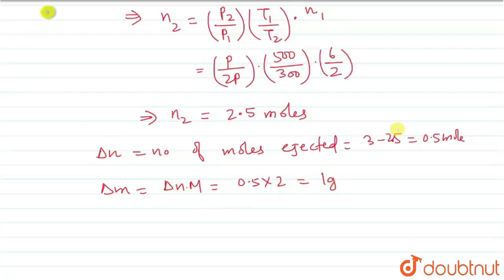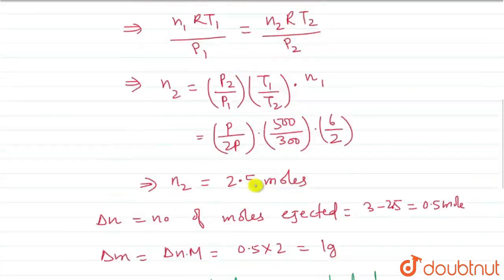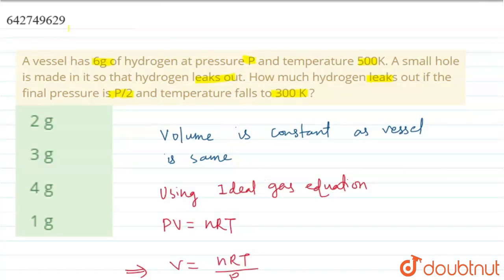1 gram of hydrogen leaked. Hence, 1 gram of hydrogen gas leaked. This will be our answer. If you look at the options, option D is correct. This was the explanation, hope you understood it. Bye bye.